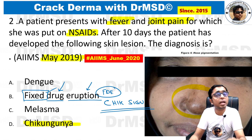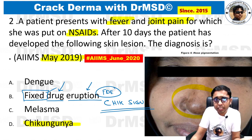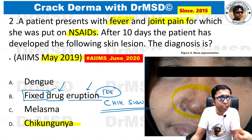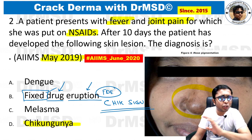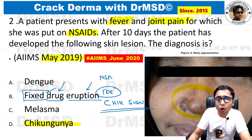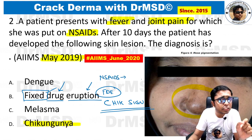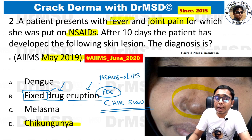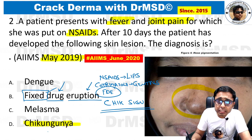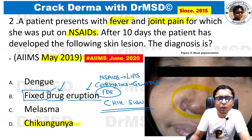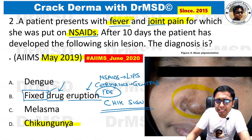However, the question does not mention any past history of the patient taking the same NSAID and developing hyperpigmentation previously. For your knowledge: NSAIDs produce FDE over the lips, and cotrimoxazole produces FDE over the genitals. That is why chikungunya is the answer. Some students may also think about melasma, but this history does not have any hormonal context.